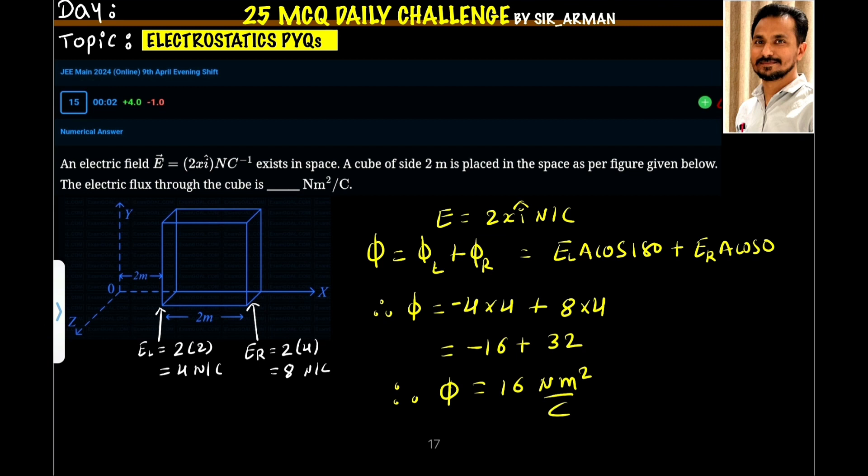Now, for all other faces: for this upper face, the electric field is parallel, so the area vector makes angle 90 degrees. It is EA cos 90; cos 90 is 0. Similarly, for the bottom face, the electric field is in the x direction and its area vector points downward, so again the angle is 90 and there will be no flux.